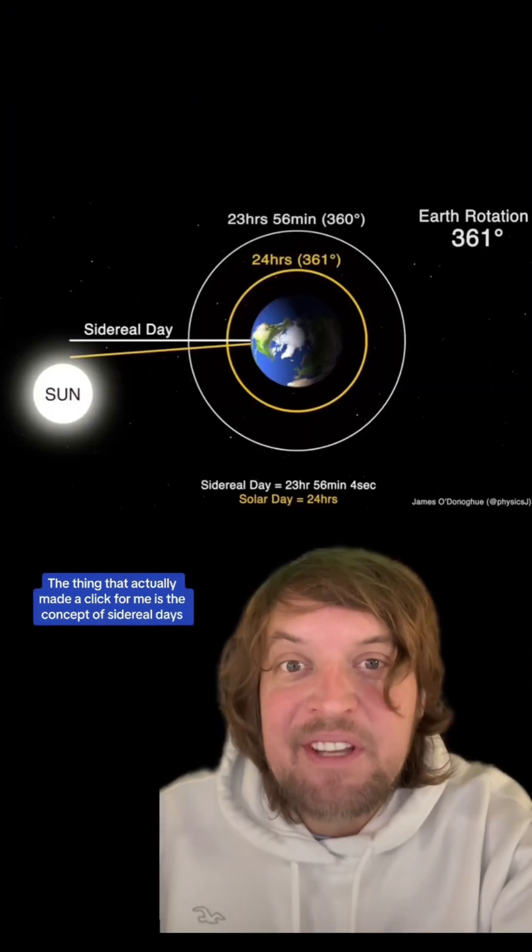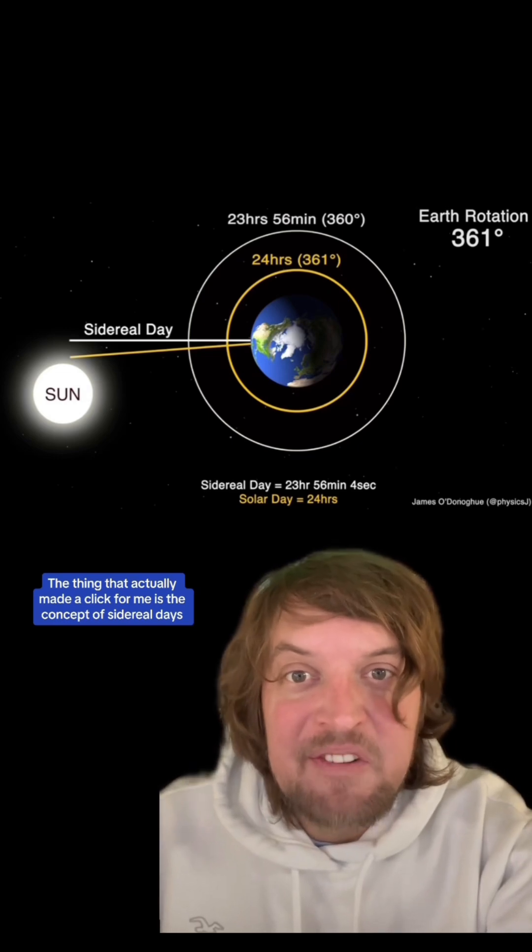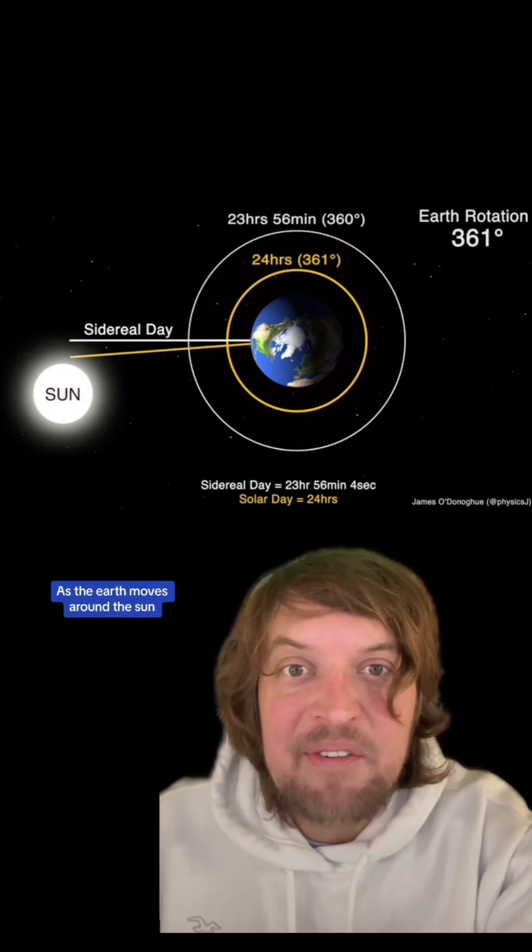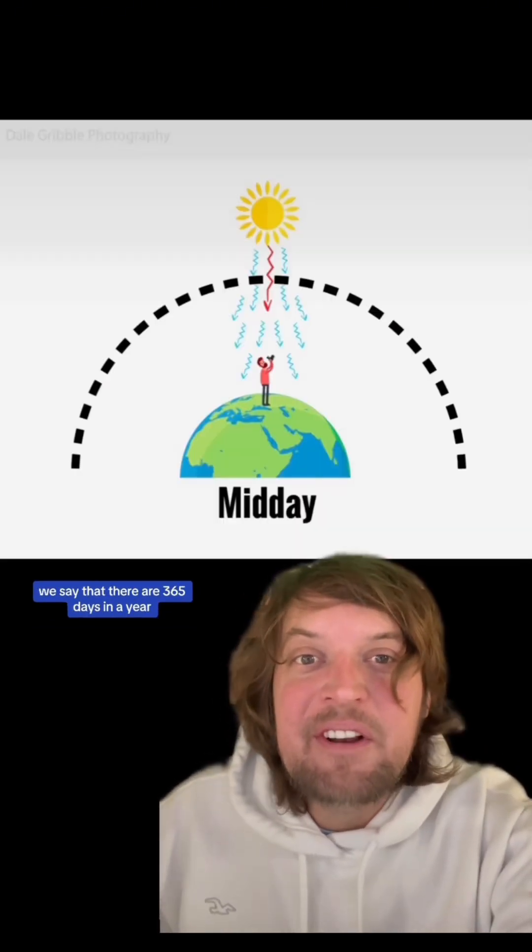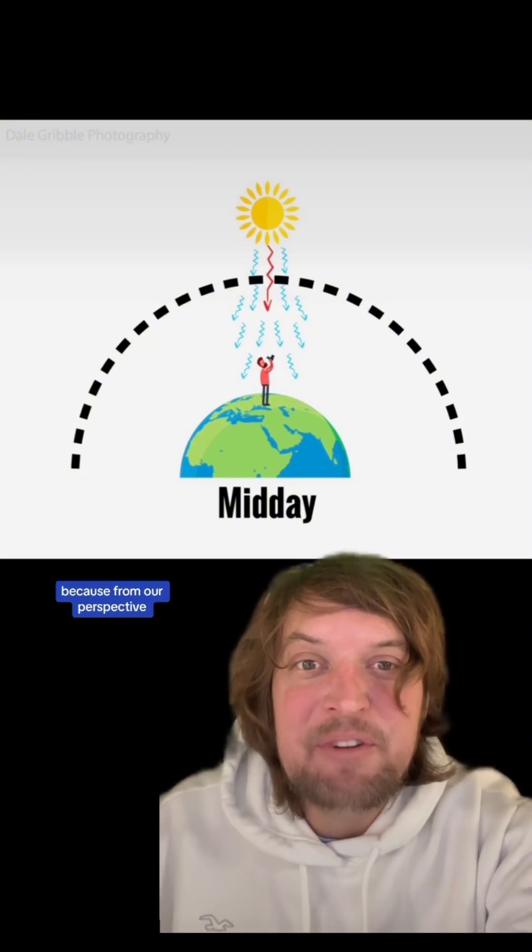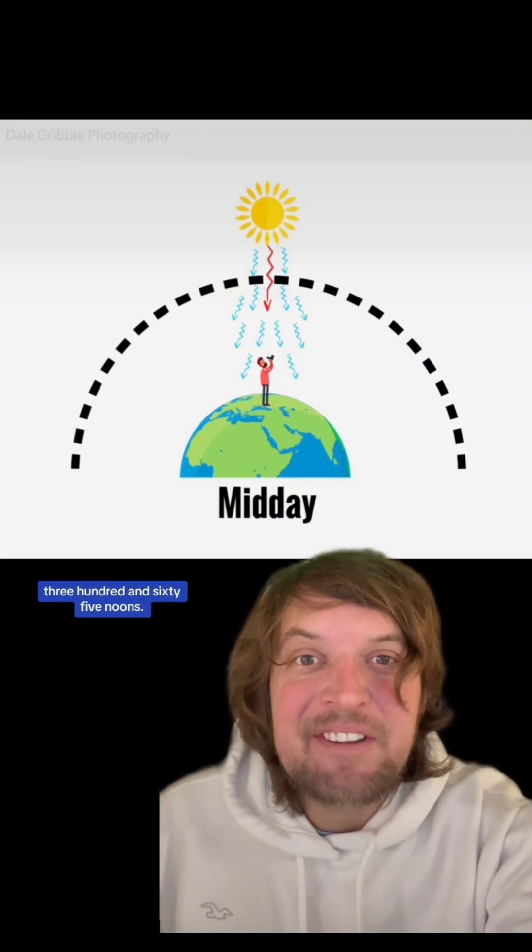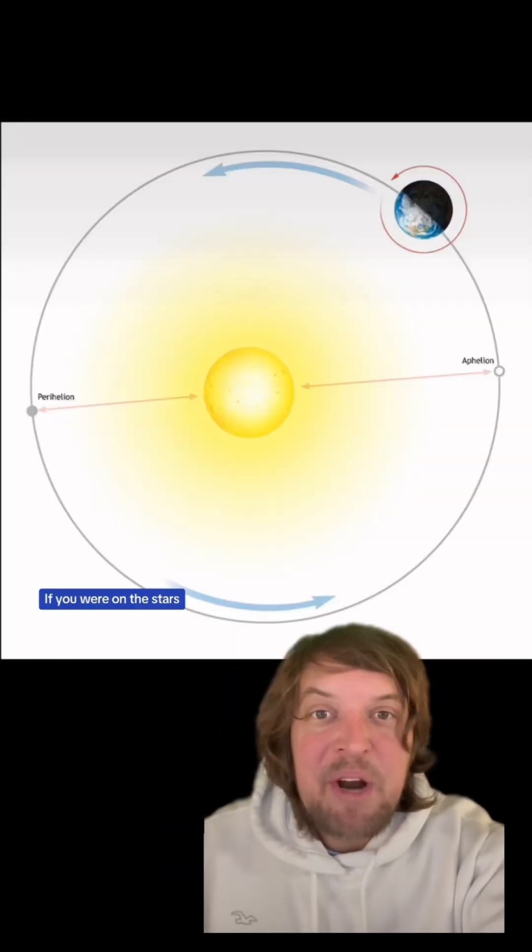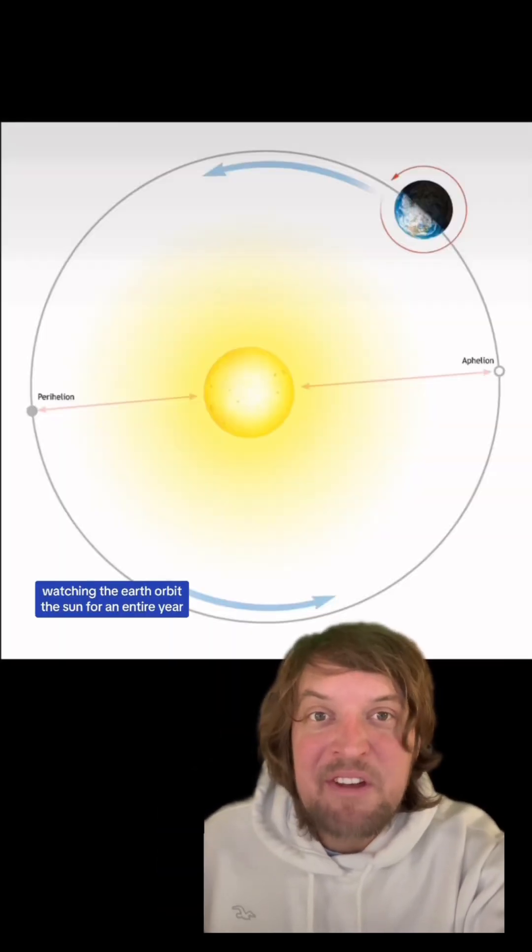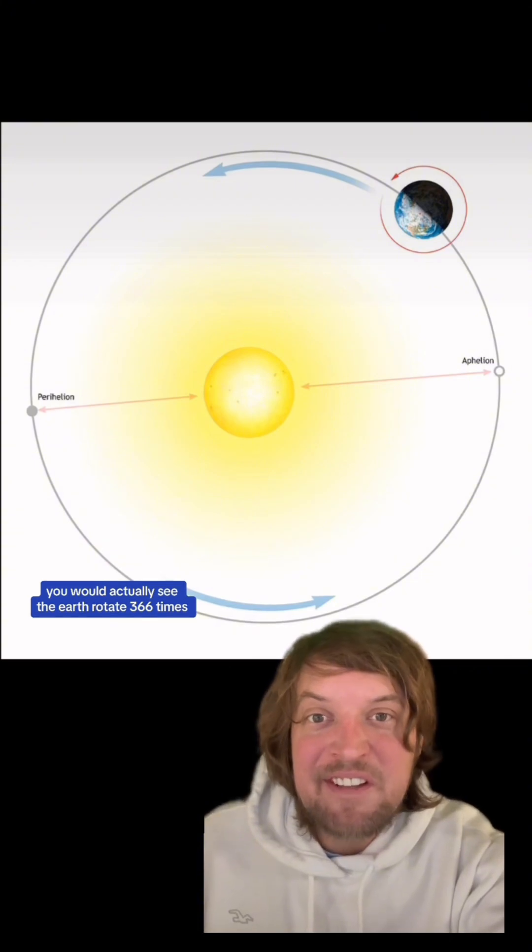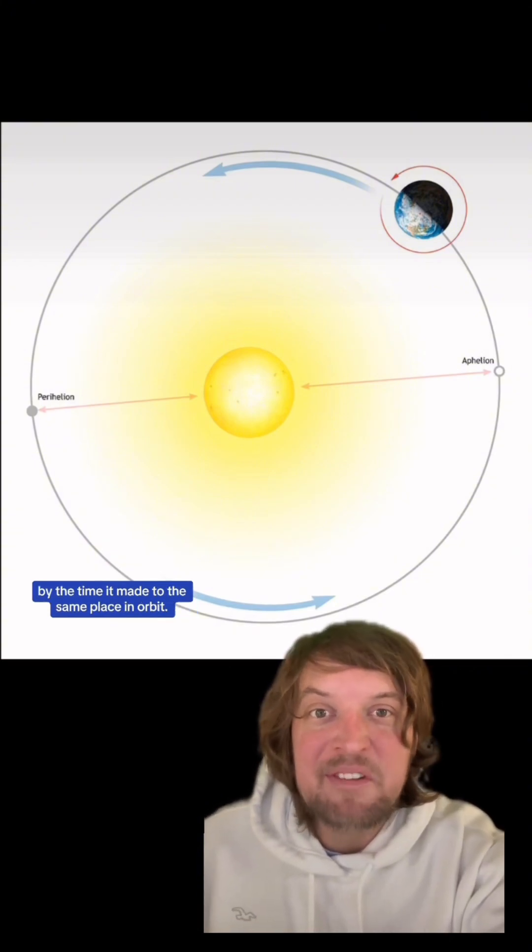The thing that actually made it click for me is the concept of sidereal days as the earth moves around the sun. So here on earth we say that there are 365 days in a year because from our perspective there are 365 days in a year, 365 noons. But if you were out in the stars watching the earth orbit the sun for an entire year, you would actually see the earth rotate 366 times by the time it made to the same place in orbit.